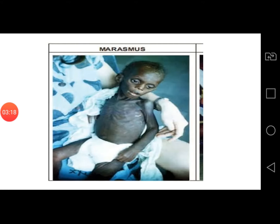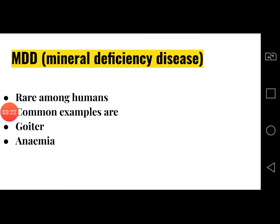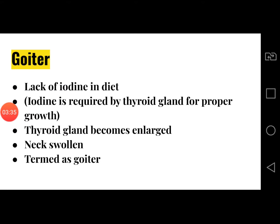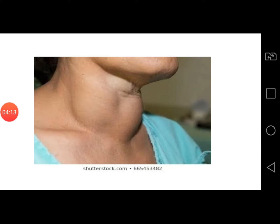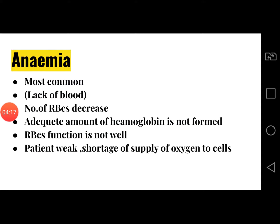The second category is mineral deficiency disease, or MDD. It is very rare among humans. The common examples of mineral deficiency diseases are goiter and anemia. Goiter results from lack of iodine in our diet. Iodine is required by the thyroid gland for proper growth. If our diet lacks iodine, the thyroid gland becomes enlarged and the neck becomes swollen, and this is termed as goiter.